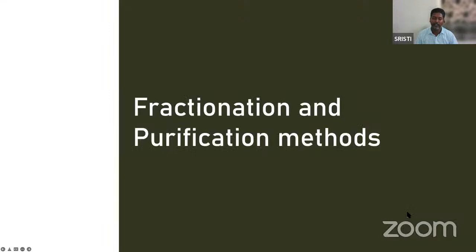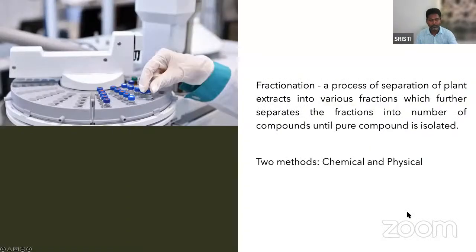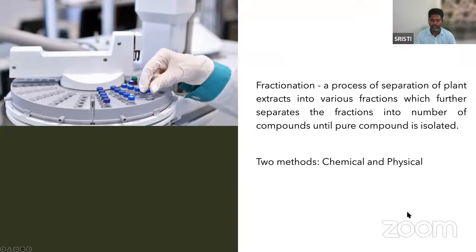Next is fractionation and purification. After extraction you need to purify your compound, because you get all the secondary metabolites — many secondary metabolites — mixed in your extract. Fractionation helps separate plant extracts into various fractions, which further separates into individual compounds until a pure compound is isolated. This is achieved by either chemical or physical means.